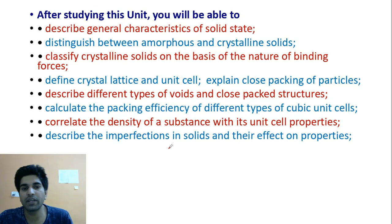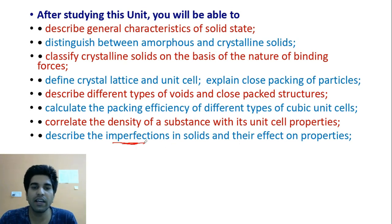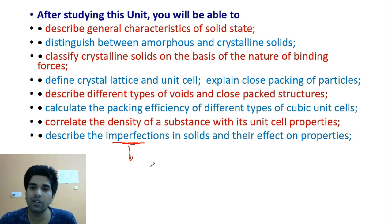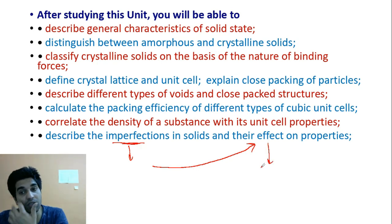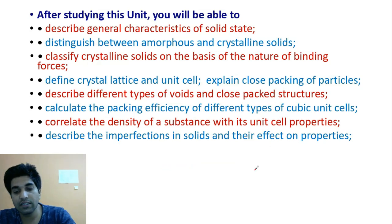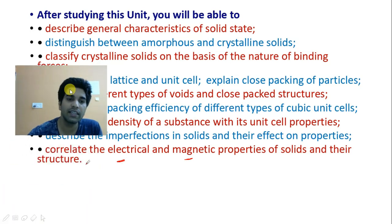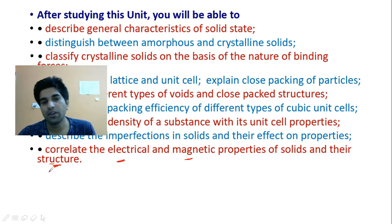The next topic is: describe the imperfections of solids and their effects on properties. Imperfections means defects — we have to describe the defects in the solid and their effect on properties. Defects in the solid will change the properties. The final topic in this list is: correlate electrical and magnetic properties of solids with their structures.